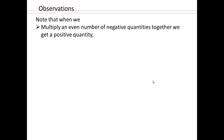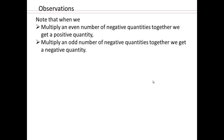Let's start with some observations. When you multiply an even number of negative quantities, like negative 1 times negative 1, we get positive 1. If you multiply an odd number of negative quantities together, we get a negative quantity. So that would be negative 1 times negative 1 times negative 1, which would be negative 1.